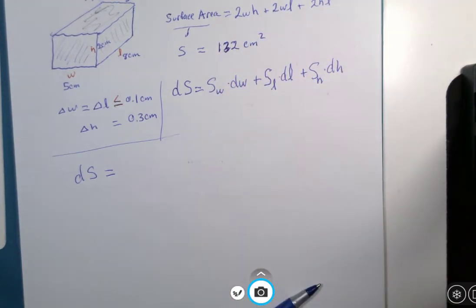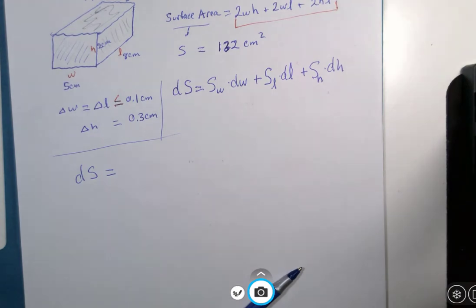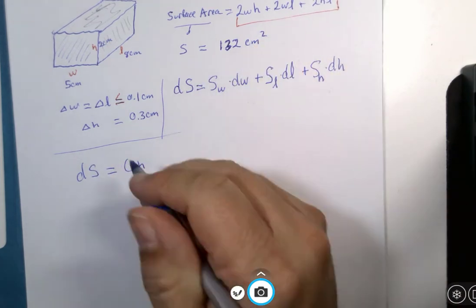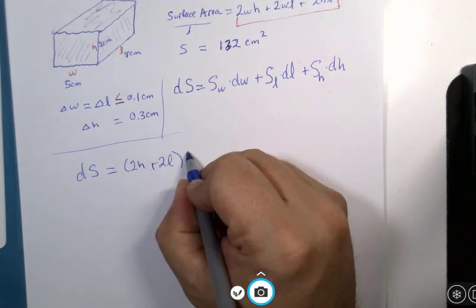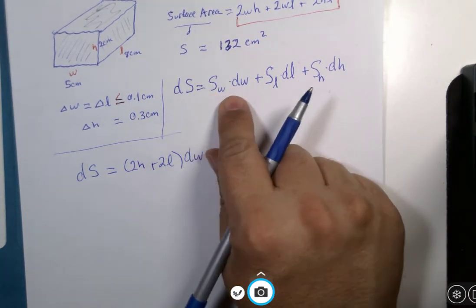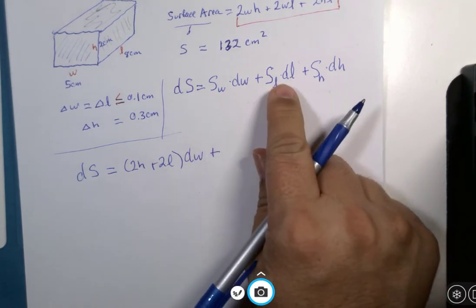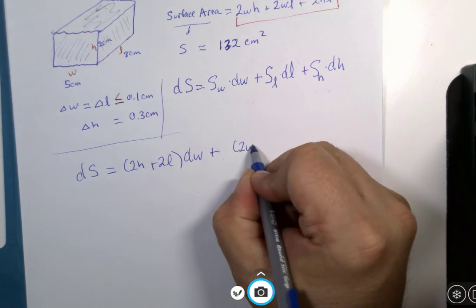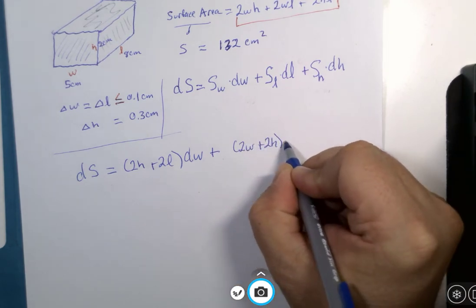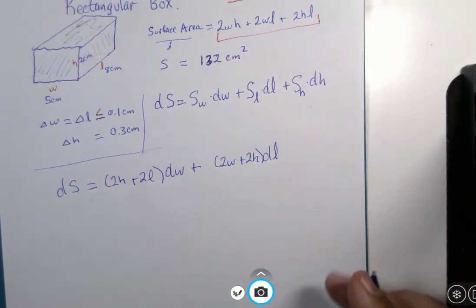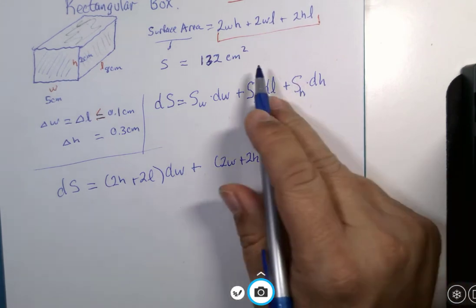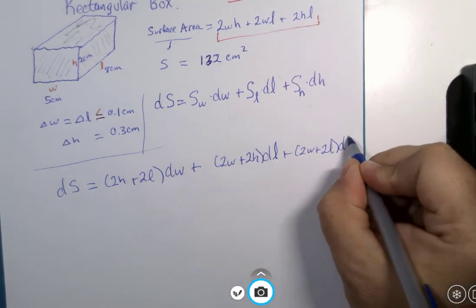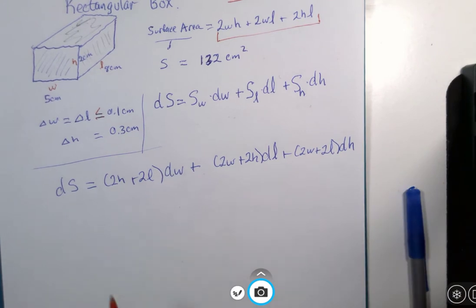So what is the derivative of this with respect to W? Well, there are two terms with W in it. And the derivative W is 1. So I'm going to get here 2H plus 2L and that's going to be multiplied by DW. That's this term plus if L is the variable. That has no L. It's a constant. So the derivative is zero. I'm going to get 2W plus 2H multiplied by DL. Finally, one more plus sign. The derivative with respect to H is 2W plus 2L DH. This is the total differential.